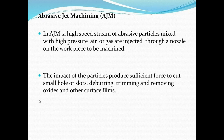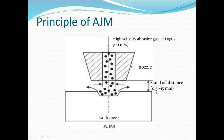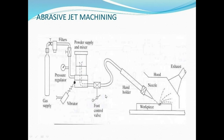The impact of particles produces sufficient force to cut small holes or slots, deburring, trimming, and removing oxides. This is the simple figure of abrasive jet machining. This is the workpiece, and this is the nozzle. We use high velocity abrasive gas jets at around 150 to 300 meters per second. A gap of 0.5 to 15mm is maintained between nozzle and workpiece, and machining is achieved.